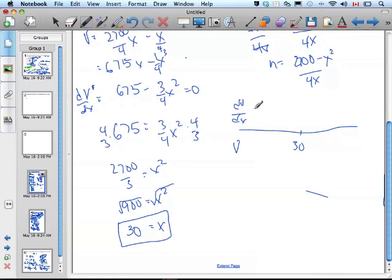I get a positive, which means increasing. If I plug a value that's bigger than 30, I end up with a negative, which is decreasing, therefore a maximum.